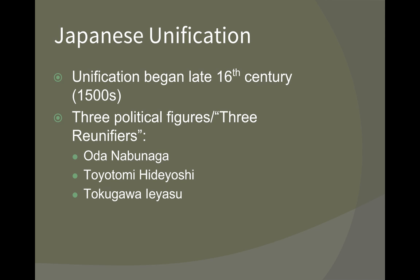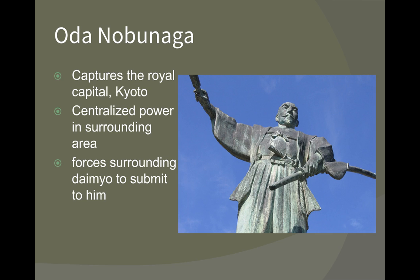The three reunifiers are Oda Nobunaga, Toyotomi Hideyoshi, and Tokugawa Ieyasu. Nobunaga was a very powerful daimyo who used his army of samurai to take over Kyoto, which at that point was the city the emperor lived in, effectively serving as the capital. After he secured Kyoto, he forced daimyos from surrounding lands to submit to him and gained even more land. He was assassinated in 1582, but before that he had consolidated about a third to one half of the lands that make up modern-day Japan.